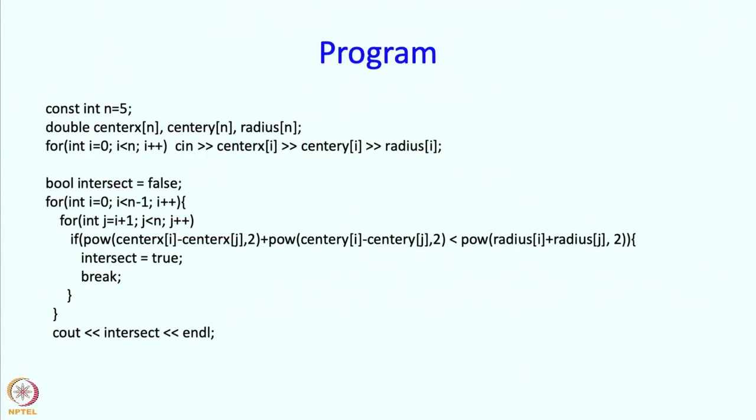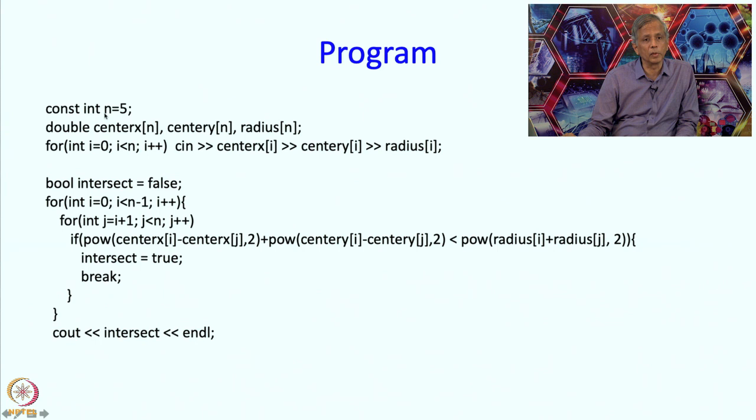Okay, so here is the program. So again I am going to use a name n which is going to denote the center, the number of disks. Okay, so I am going to have an array to keep track of all the x coordinates of the centers of all the disks and an array radius to keep track of the radii of all the disks. Then I am going to read in this data. So that is all simple enough.